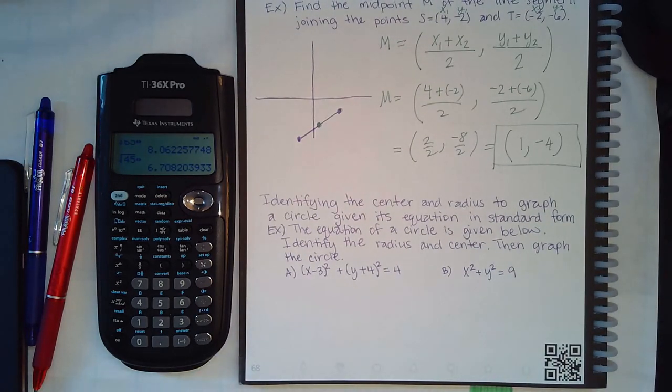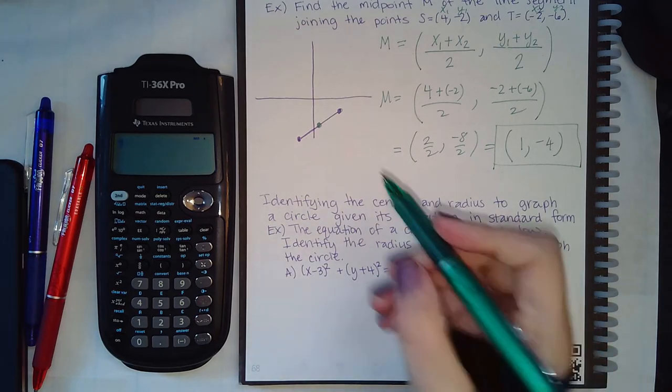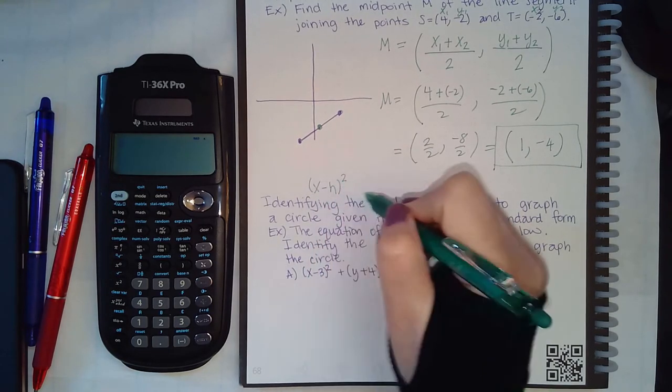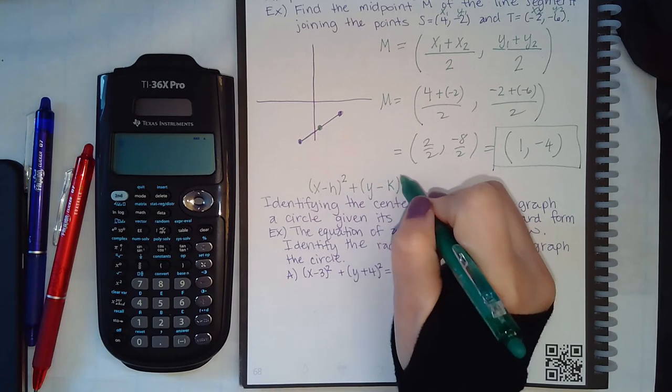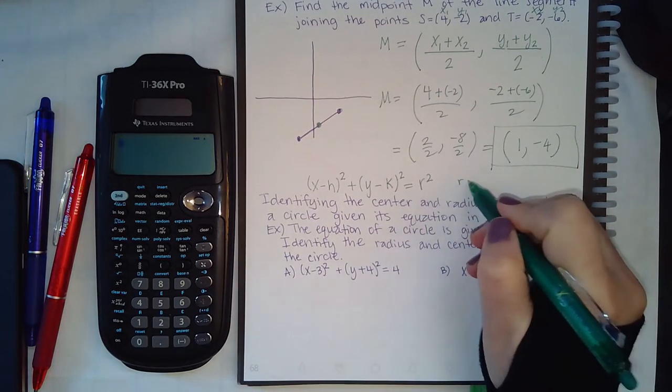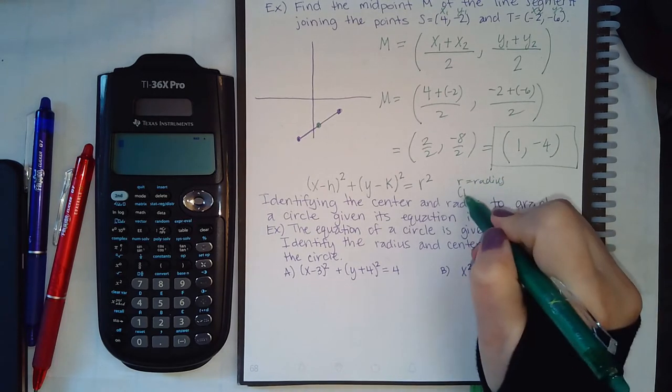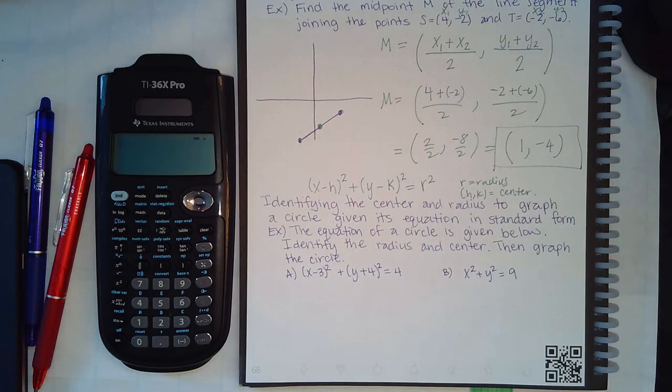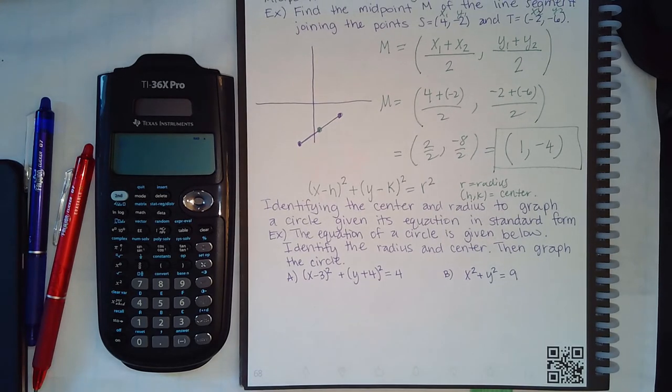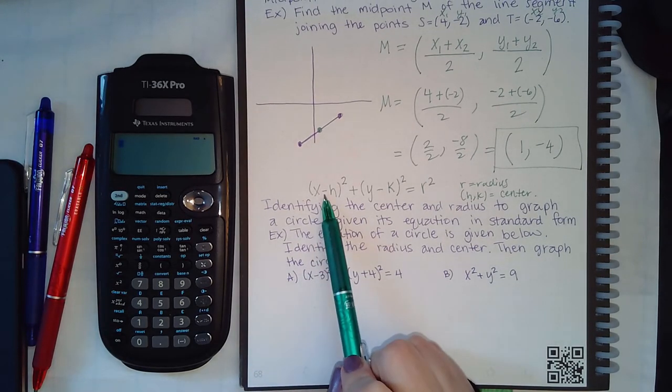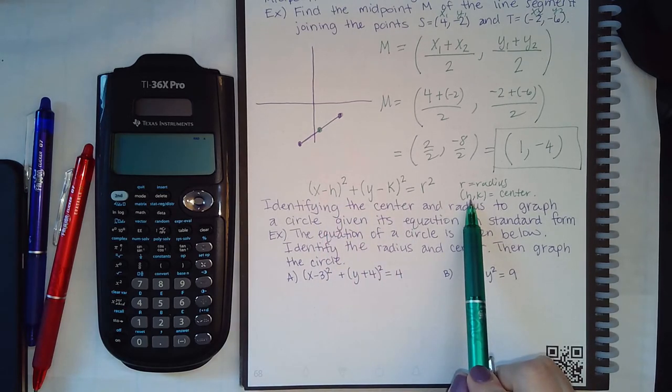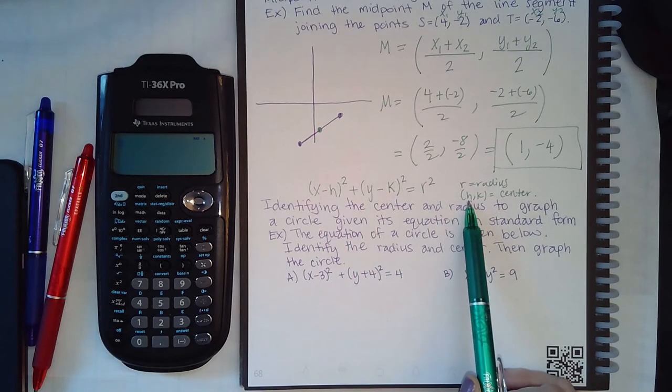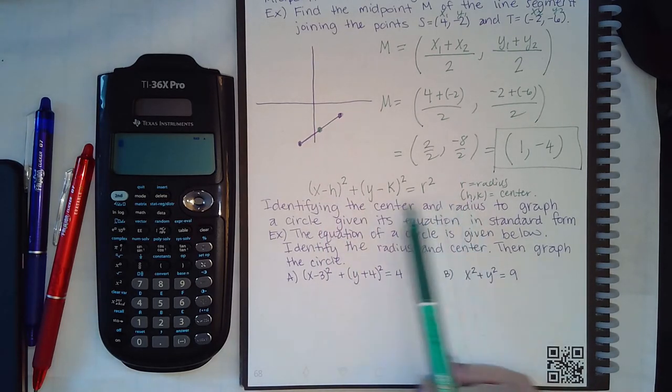Now this topic says identifying the center and radius of a graph of a circle given its equation in standard form. The equation in standard form of a circle is (x minus h) squared plus (y minus k) squared equals r squared. R is the radius and h, k is the center. They want us to identify the radius and the center for these two equations. Notice that the formula has a minus here, but when I write the center, it's positive. So whatever the sign is in here, when you write the coordinates down, you're going to use the opposite sign.